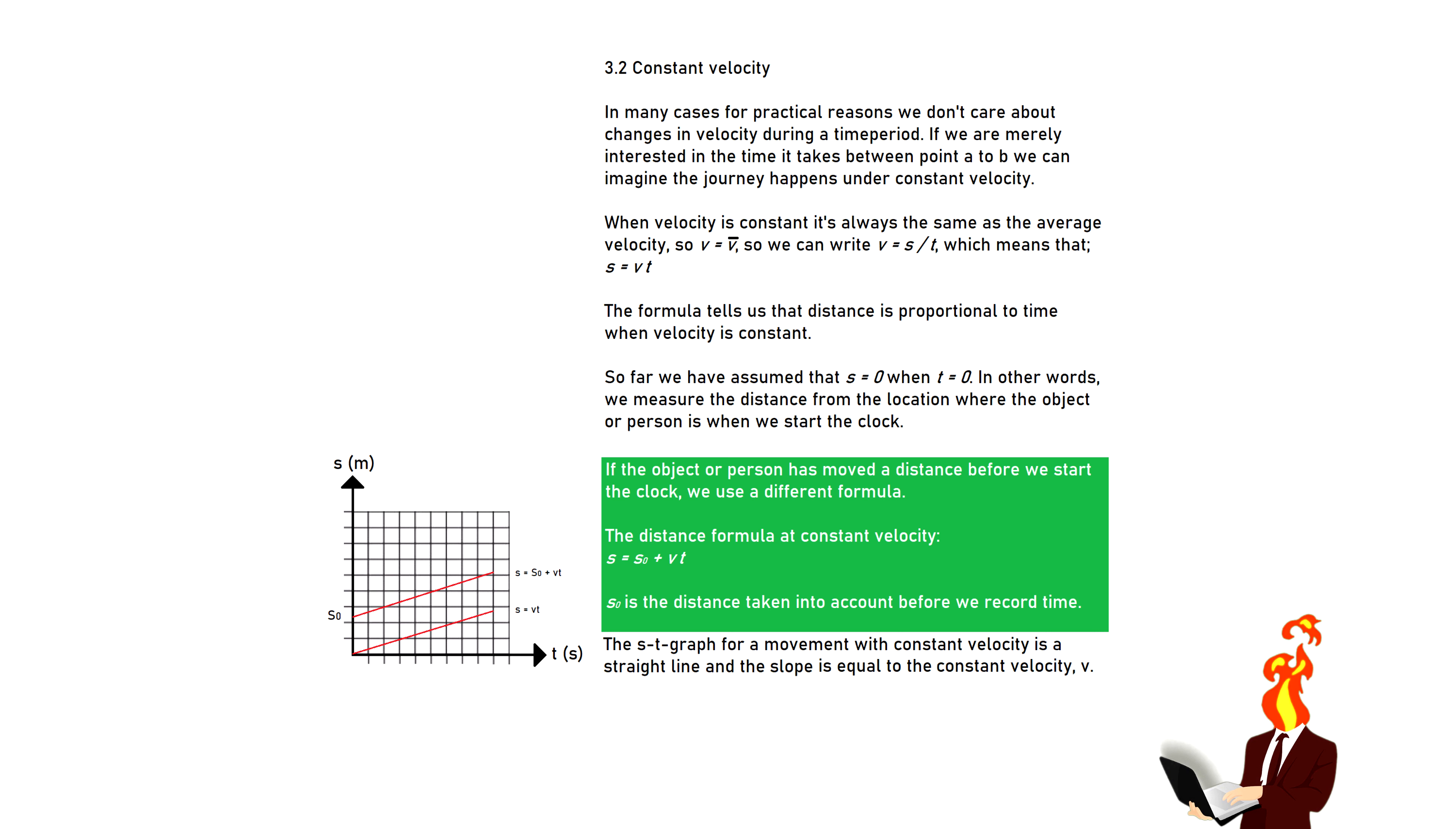When velocity is constant, it's always the same as the average velocity. So V equals dash V. We can write V equals S divided by T, which means that S is equal to V times T. The formula tells us that the distance is proportional to time when velocity is constant.